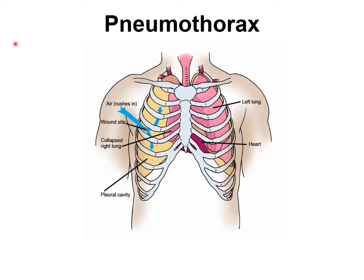In this diagram, pneumothorax has occurred. Something has caused a wound in the chest and punctured the pleural cavity. Air has rushed in and you can see the right lung has collapsed.